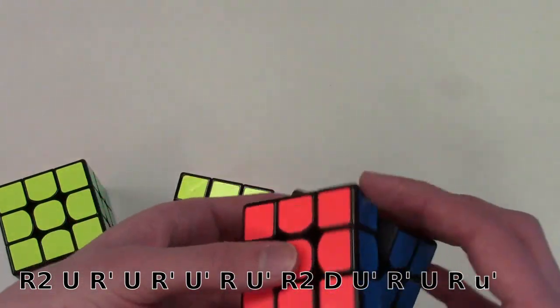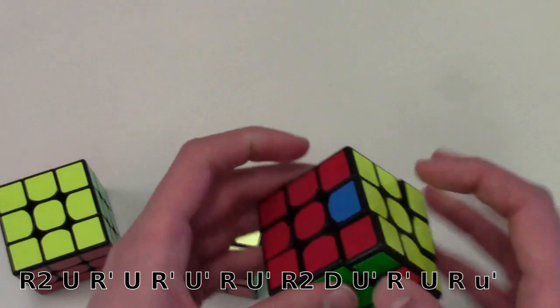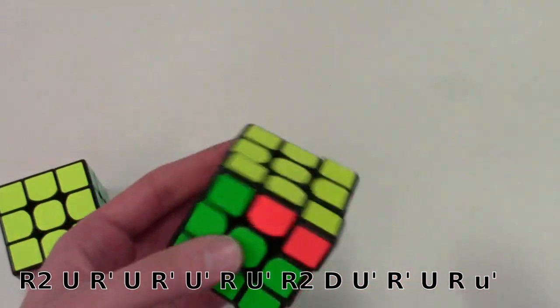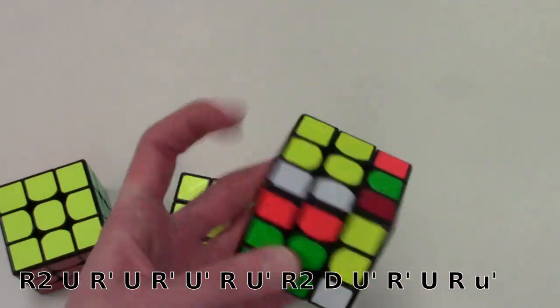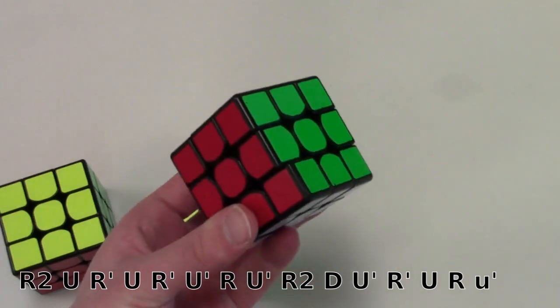But it does save the AUF in the case that these two are already aligned, which makes it a lot more efficient. Just like that.